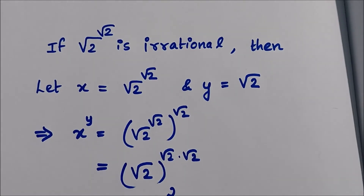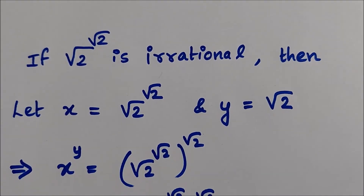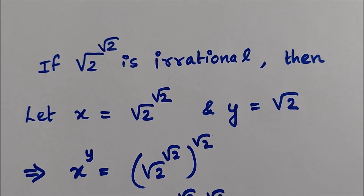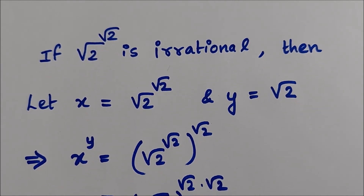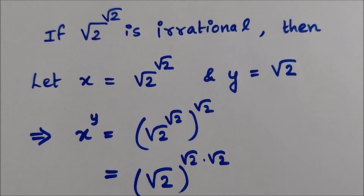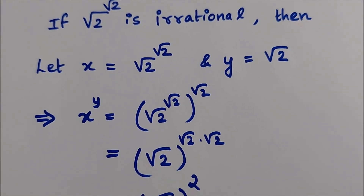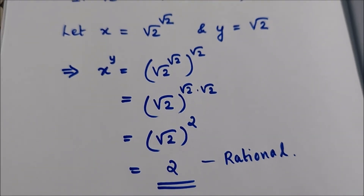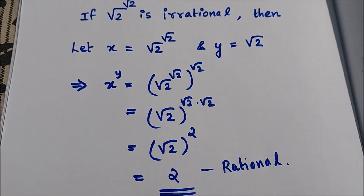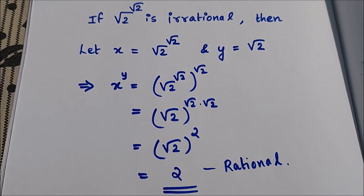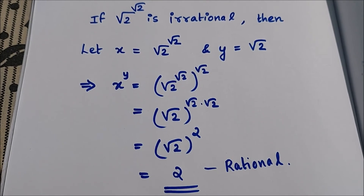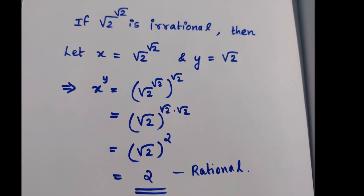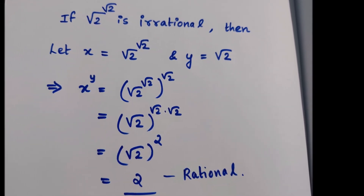But if √2 raised to √2 is irrational, then we let X equal to √2 raised to √2 and Y equal to √2, so that X raised to Y becomes (√2^√2)^√2, which equals √2 raised to (√2 × √2), which is √2 raised to 2, which equals 2. Since 2 is rational, in that case also we got two irrational numbers X and Y such that X raised to Y is rational.